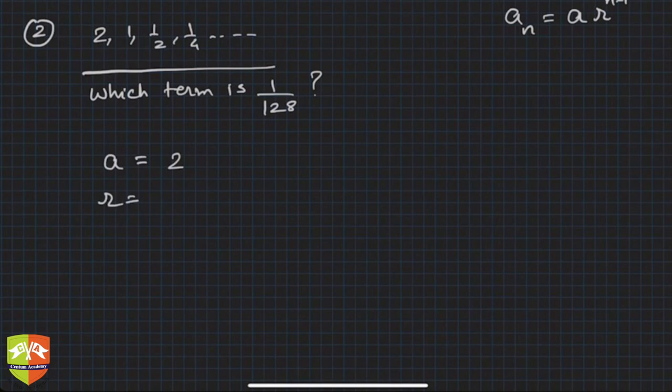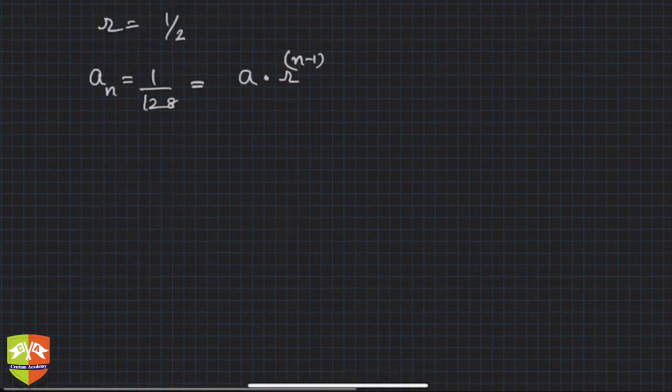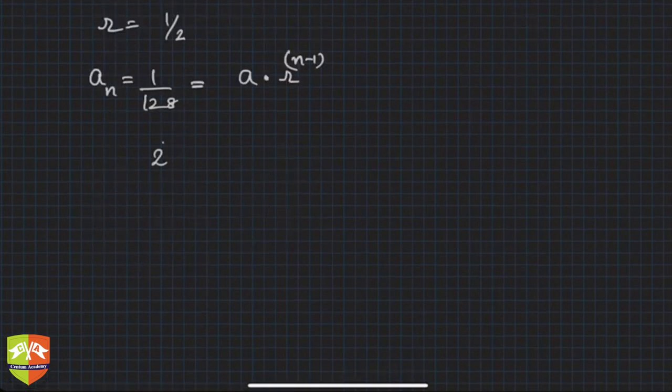an is equal to 1/128 is equal to a into r^(n-1). You have to find out n. So 1/128 is 2 to the power -7, and this is a is 2, and r is 1/2 to the power n-1. So 2^(-7) is equal to 2^1 into 2^(-n+1).